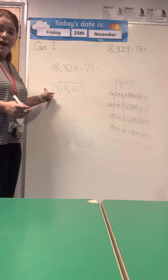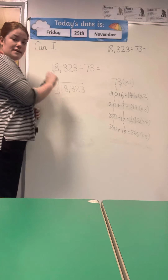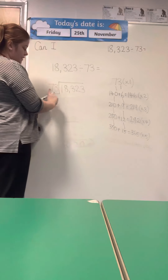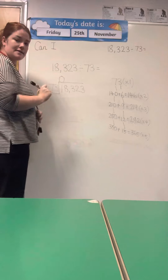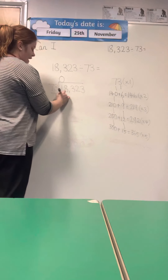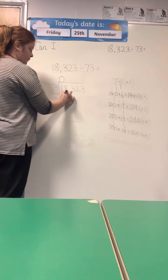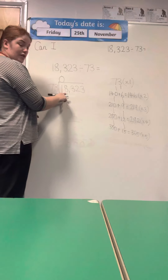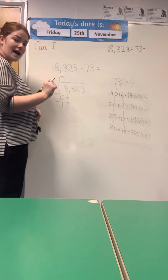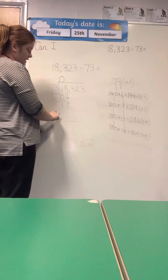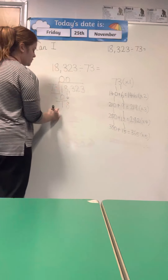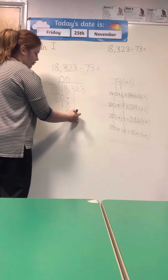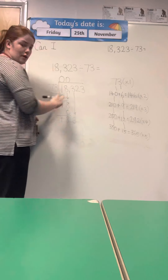Now I can move back to my division. Remember: divide, subtract, bring it on down, bring it on back. So 1 divided by 73 is 0 — that's my divide. I then subtract nothing, which still leaves me with 1, and then I bring it on down — bringing down the 8 from the thousands column. It's 18 divided by 73, which again is 0, so I subtract 0. I'm still left with 18, then I bring it on down, bringing down the 3 from the hundreds column.